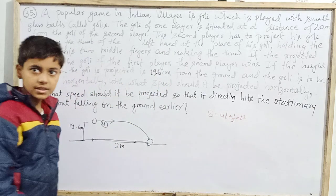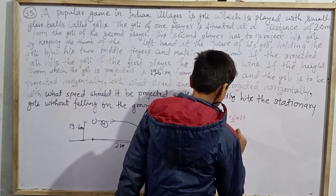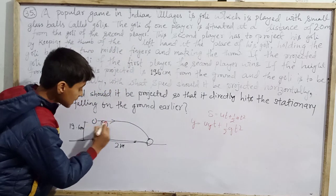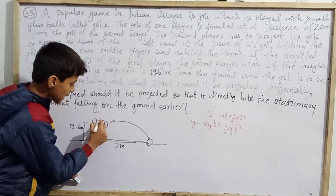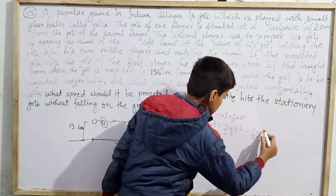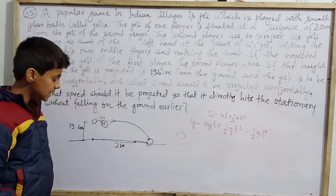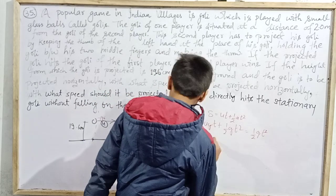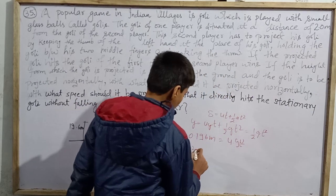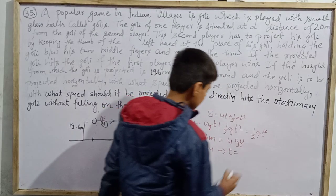Since the projectile is fired horizontally, the vertical component u_y is 0. So h = half·g·t². Taking g = 9.8, this gives 0.196 = 0.9·t² — wait, let's take it as half times 9.8 times t² = 0.196. Solving, t² = 0.04, therefore t = 0.2 seconds.